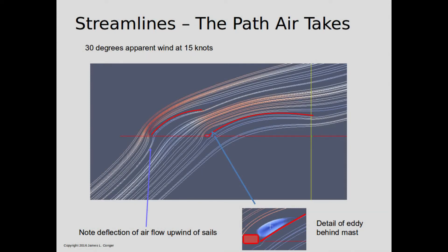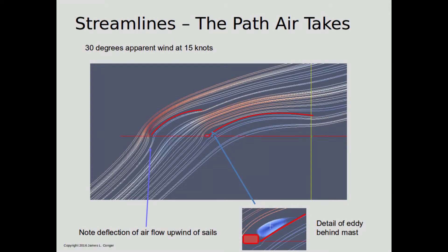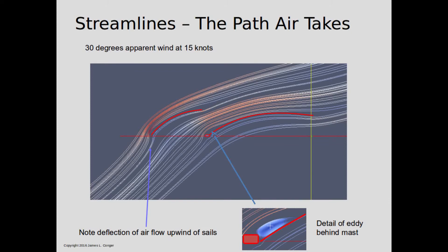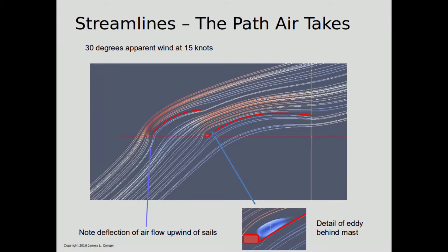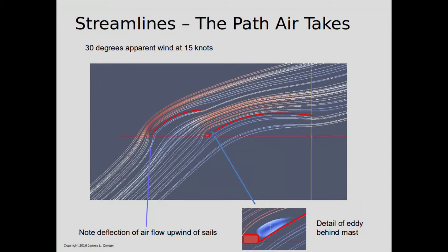Let's look at the airflow around the jib and mainsail in more detail. This diagram is a two-dimensional slice through the sails sailing in a close-hauled configuration. The lines represent streamlines — if you imagine releasing little bits of fluff and following their path downwind, these lines represent the path they'd take around the sails. One surprising feature is a little streamlined eddy right behind the mast, where the air is actually circulating in a small circle, coming back towards the mast next to the sail. This little eddy helps reduce the impact of the mast in disturbing the airflow around the mainsail.